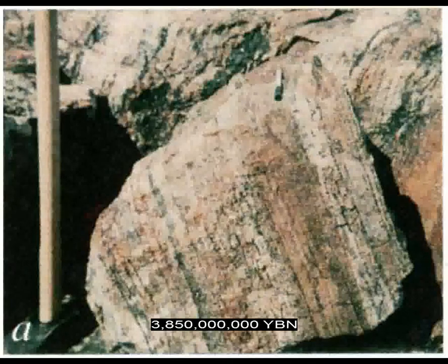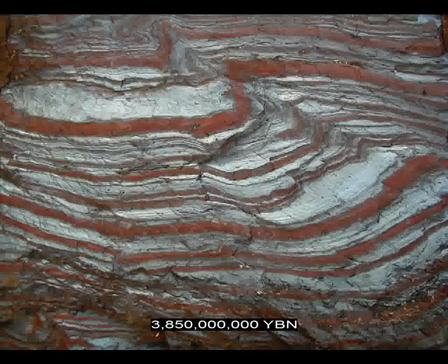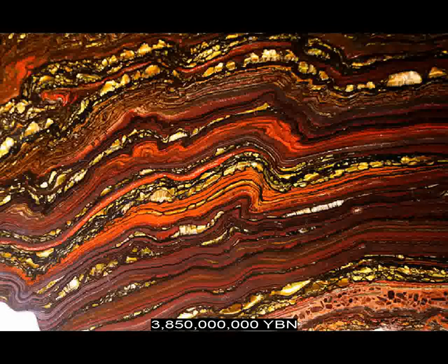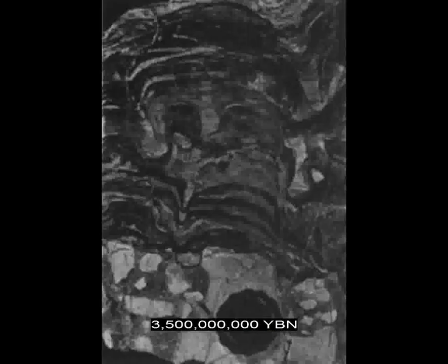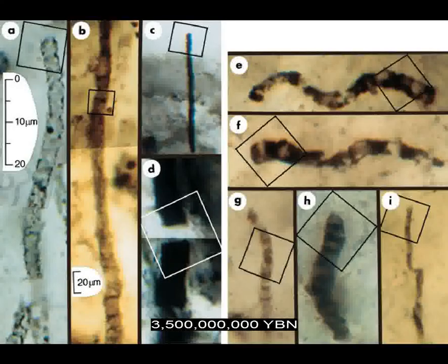The oldest sediment, the banded iron formation, begins. Banded iron formation is sedimentary rock spanning from 3.8 to 1.8 billion years ago, made of iron-rich silicates with alternating layers of black-colored reduced or ferrous iron and red-colored oxidized or ferric iron. These alternating layers represent a seasonal cycle where the quantity of free oxygen in the ocean rises and falls, possibly linked to photosynthetic organisms. The atmosphere of Earth still has only small amounts of oxygen at this time. The oldest fossil evidence of life — stromatolites — are found in 3,500 million-year-old chert in Australia and South Africa. 2.8 billion years will pass before the first animal evolves.